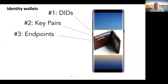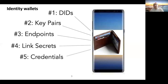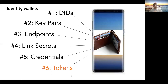Identity wallets also support endpoints — how other wallets or services interact with you — as well as secrets, credentials in digital form, and tokens. You could do payments, authorize yourself in services, or pay anonymously. Payment is one of the crucial application areas of wallets.